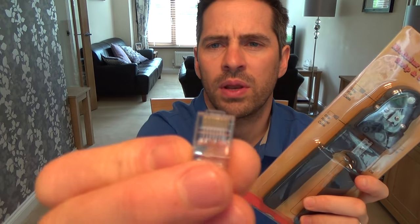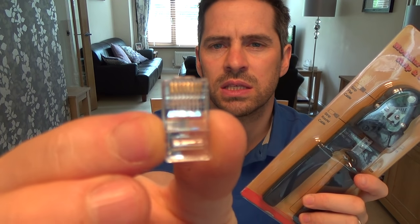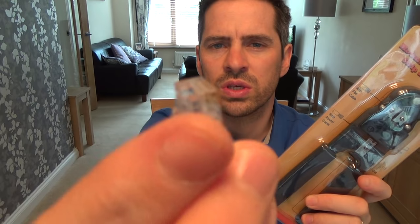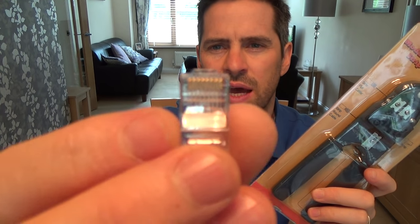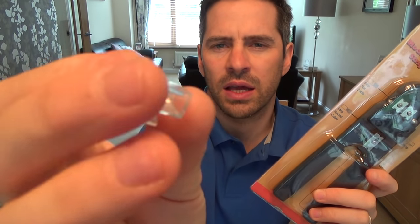Now, RJ45 crimpers are for crimping on these little connectors here. This is an RJ45 plug, also known as an 8P8C because it's got 8 position and 8 contacts, 8 little gold pins there.